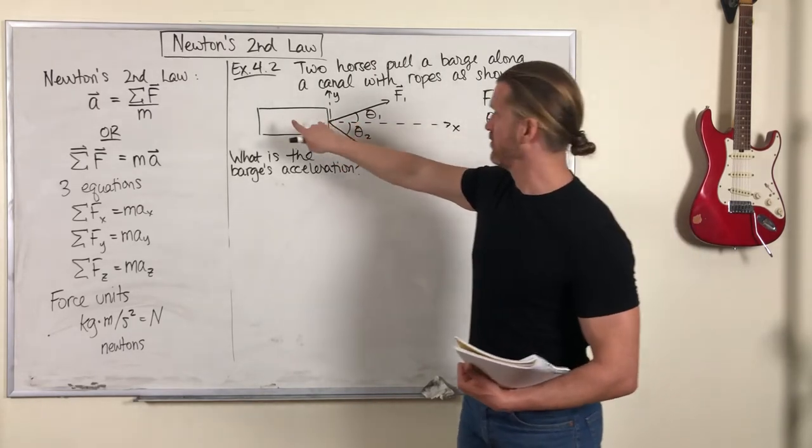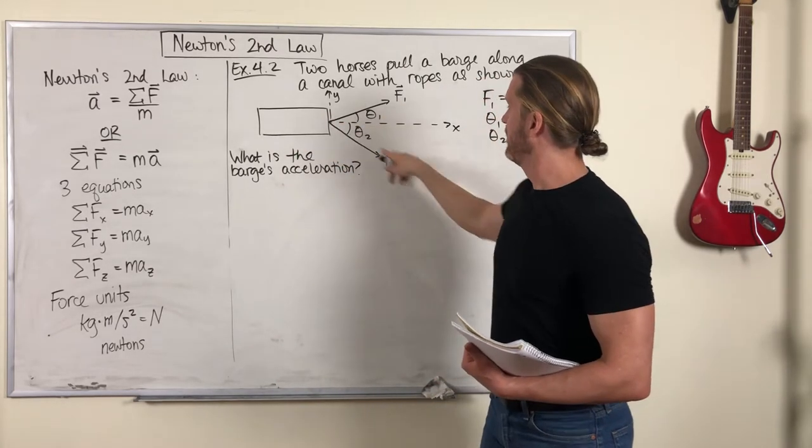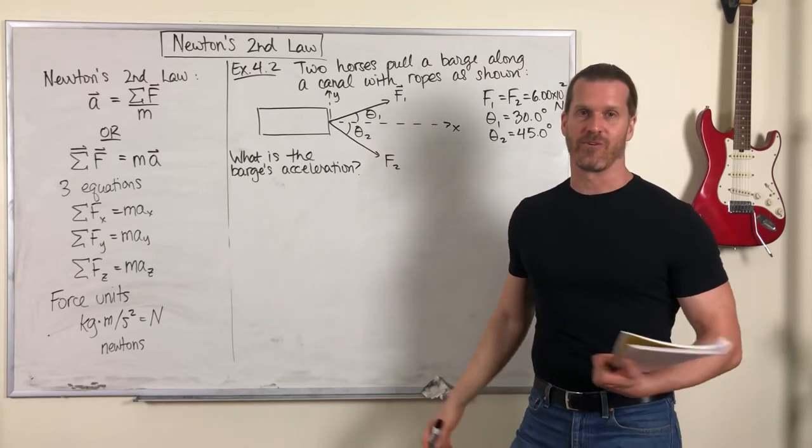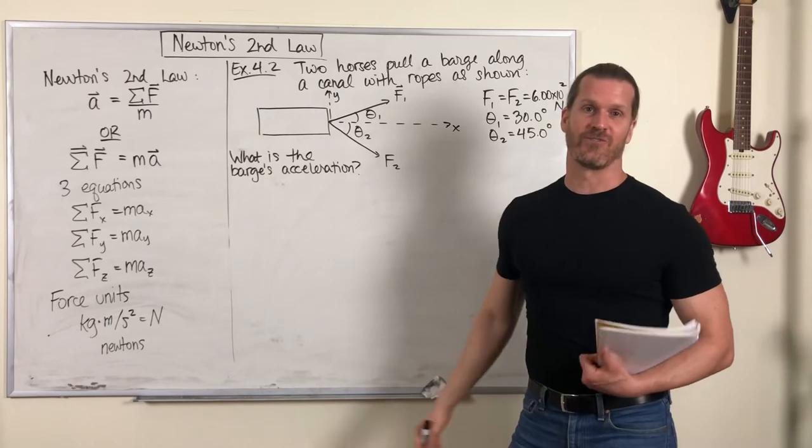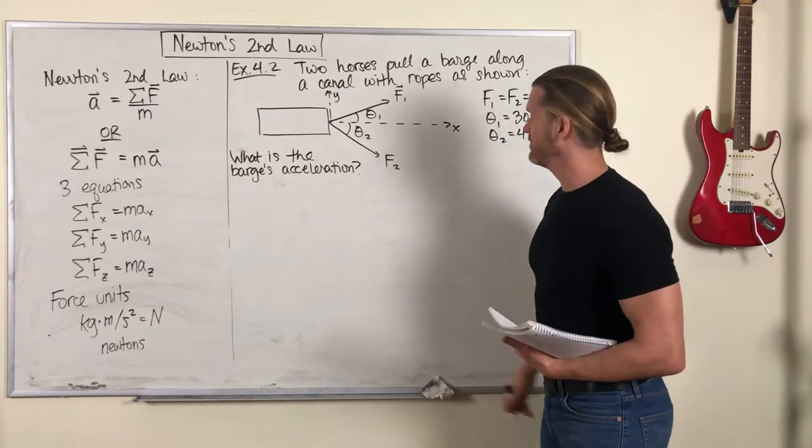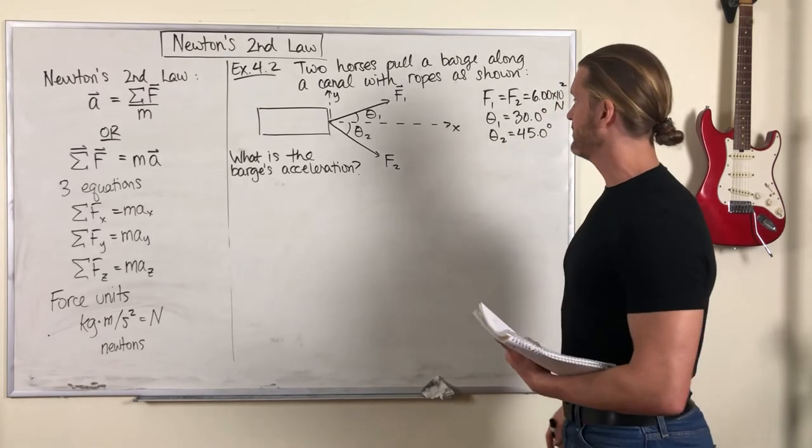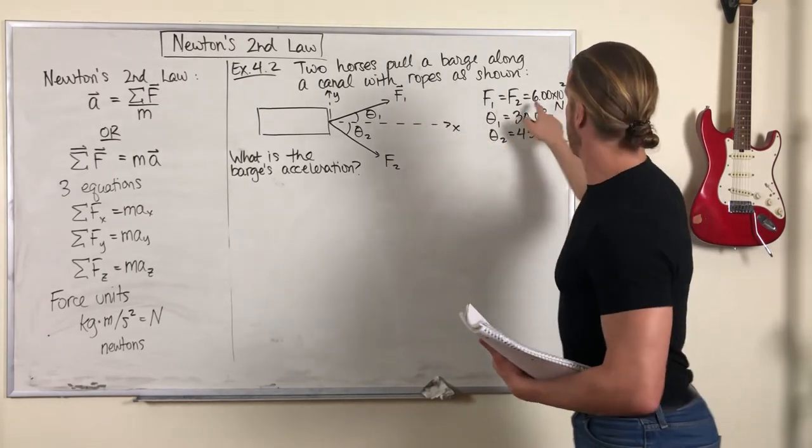So a top-down view would be the barge here, floating on the water, with two ropes connected to two horses standing here. I can't draw a horse, especially a top view of a horse, so I'm just essentially drawing the ropes, really just drawing the force vectors on the barge.